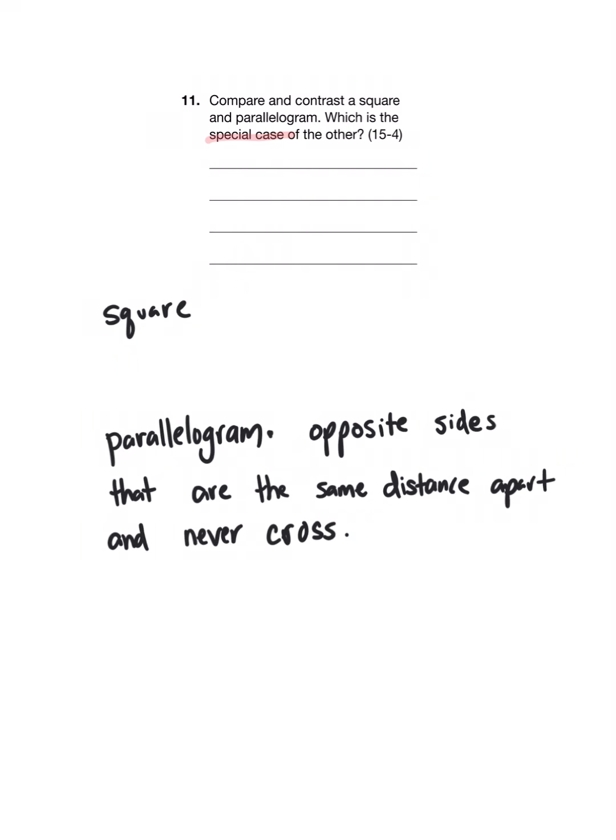On the other hand, a square must have exactly four equal sides. That means that a square has attributes not shared by all parallelograms. So a square is a special case of a type of parallelogram. Okay, that's all for today. Let me know if you have any questions.